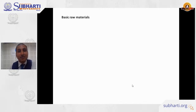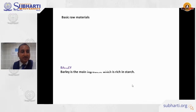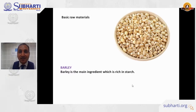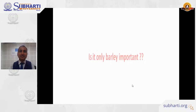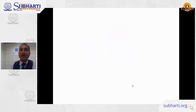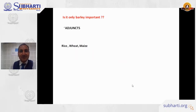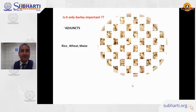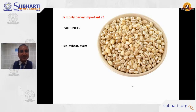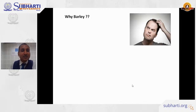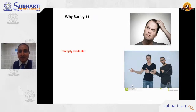The first basic raw material is barley, which is the main ingredient — very rich in starch. We also use rice, wheat, and maize, which are called adjuncts. The first reason barley is used is that it is readily and cheaply available in the market compared to other forms of cereal. The second reason is that barley is not used as a staple diet — unlike rice in southern India or wheat in northern India.